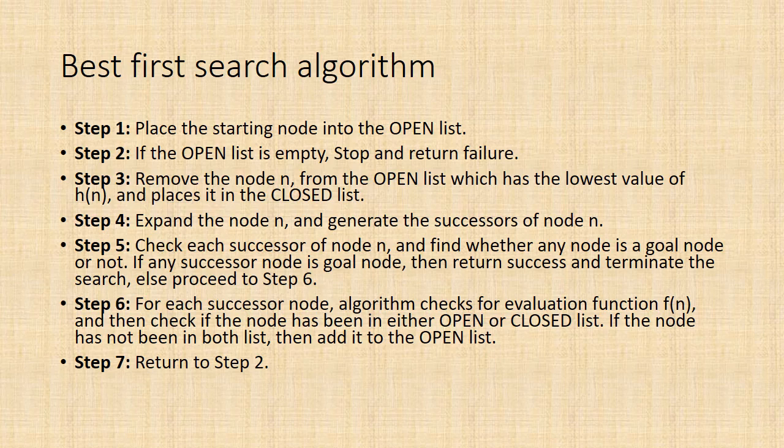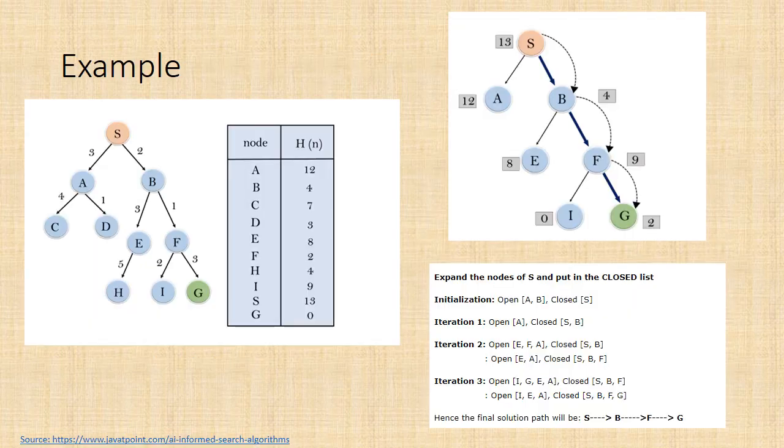Step 6, for each successor node, algorithm checks for evaluation function f(n) and then check if the node has been in either open or closed list. If the node has not been in both lists, then add it to the open list. Step 7, return to step 2. Consider the below search problem, and we will traverse it using a greedy best-first search. At each iteration, each node is expanded using evaluation function f(n) = h(n), which is given in the table. In this search example, we are using two lists which are open and closed lists. The following are the iterations for traversing the example.